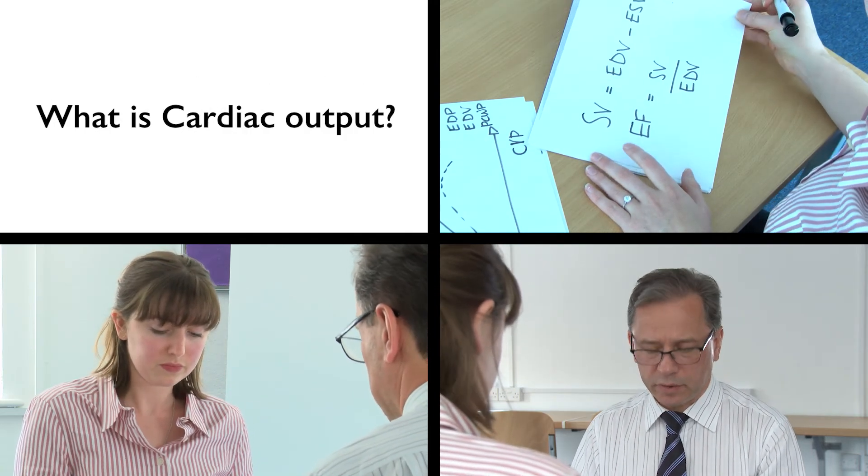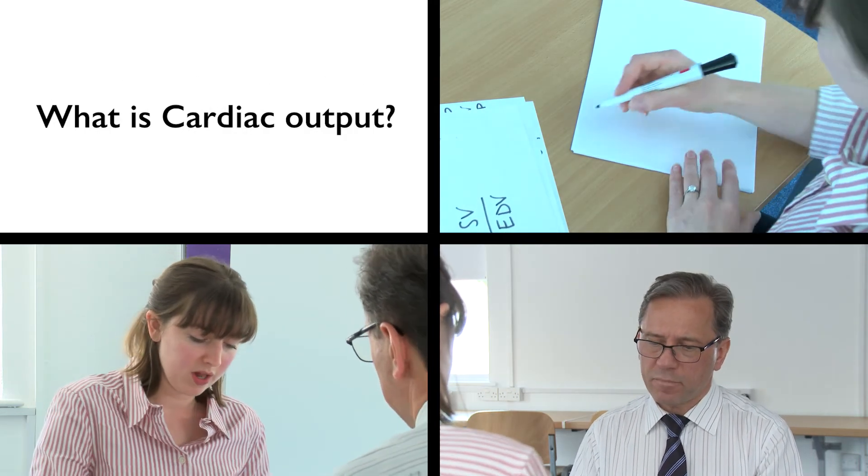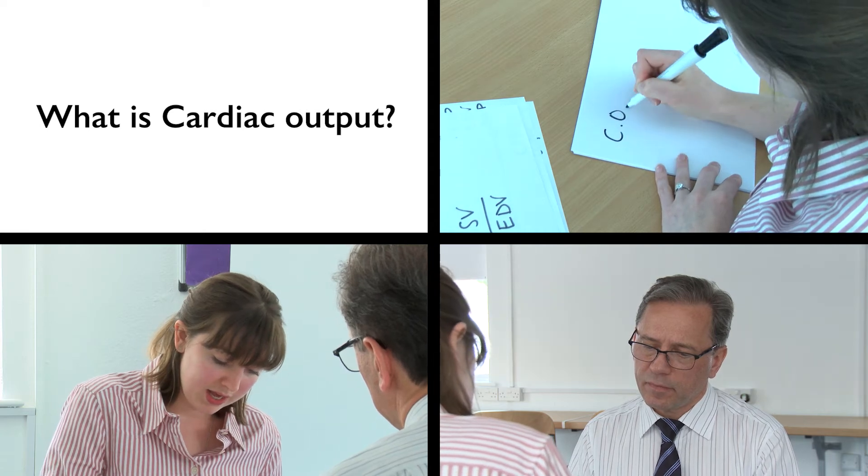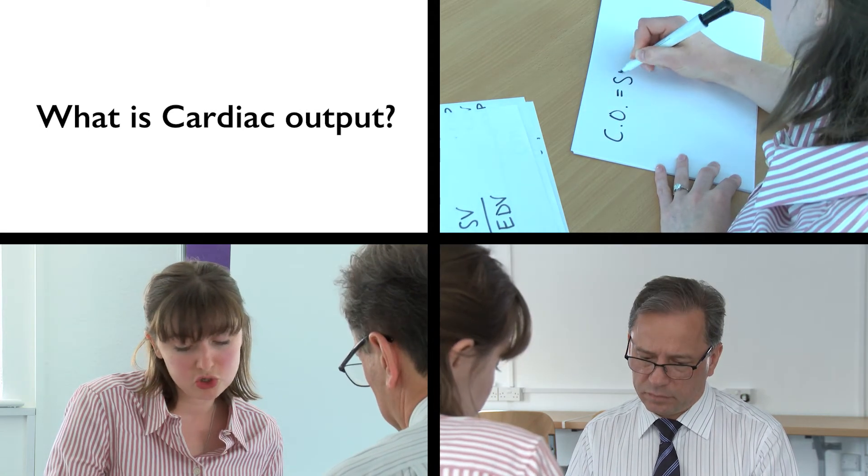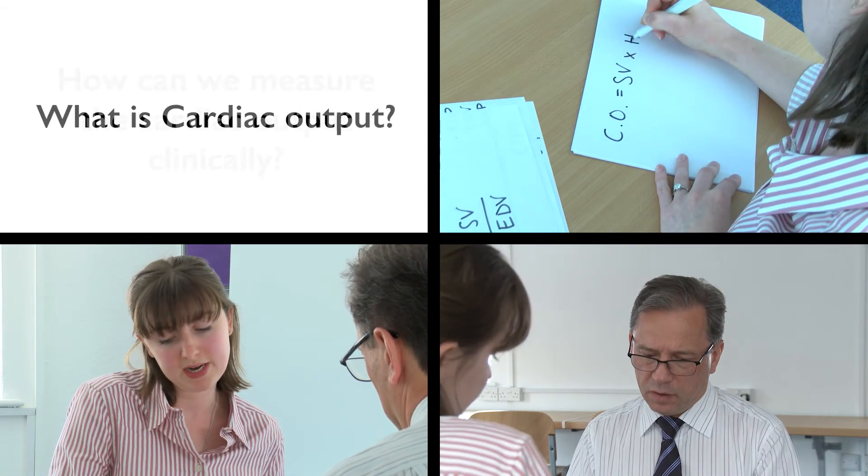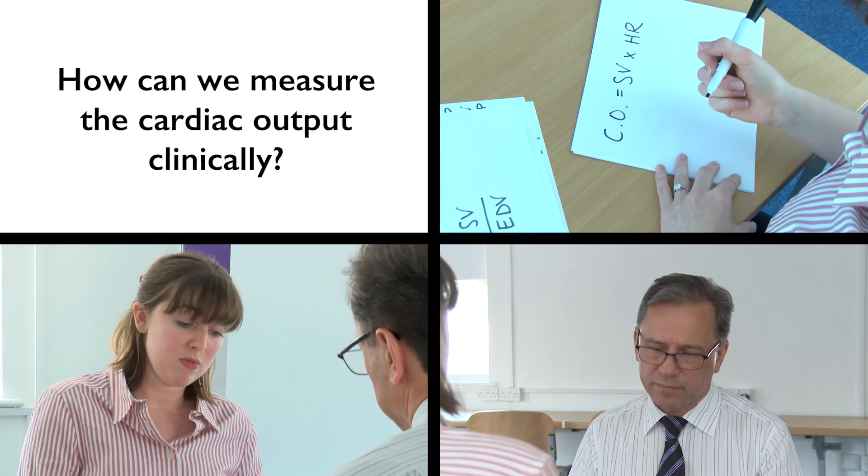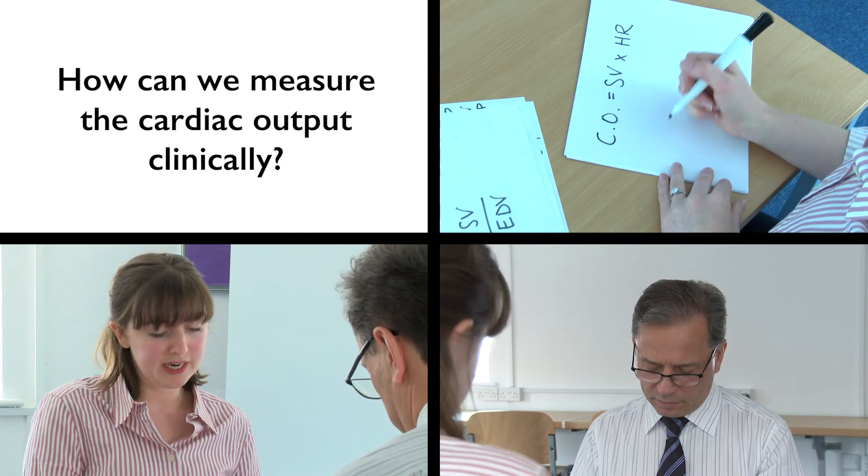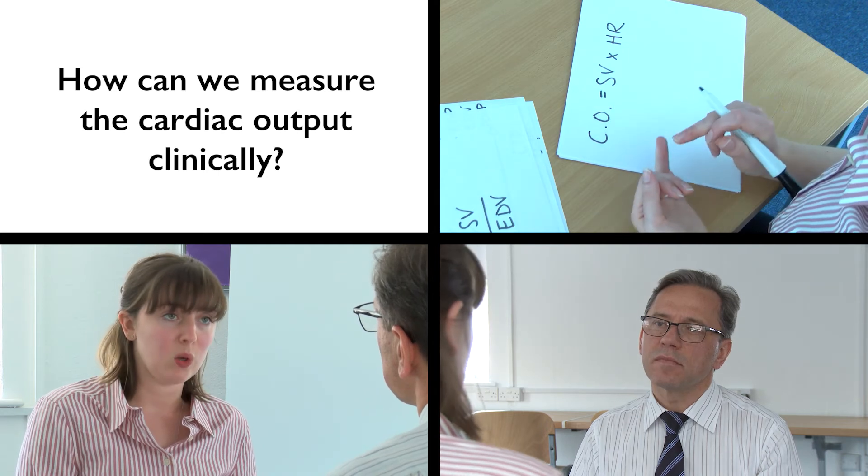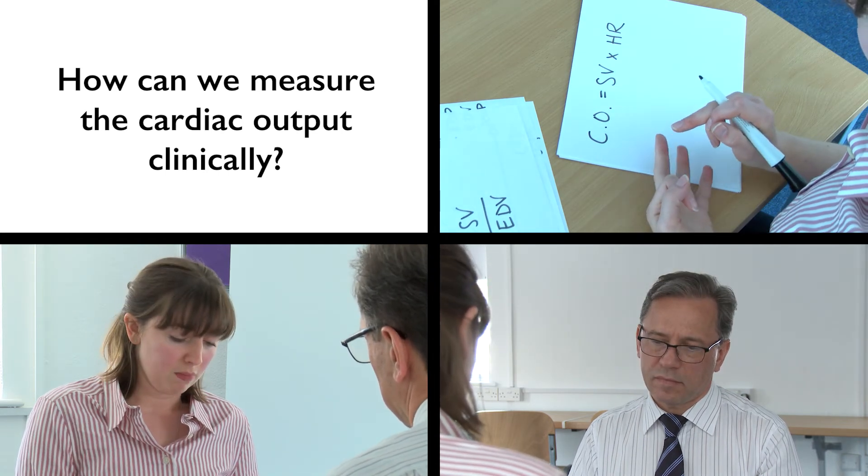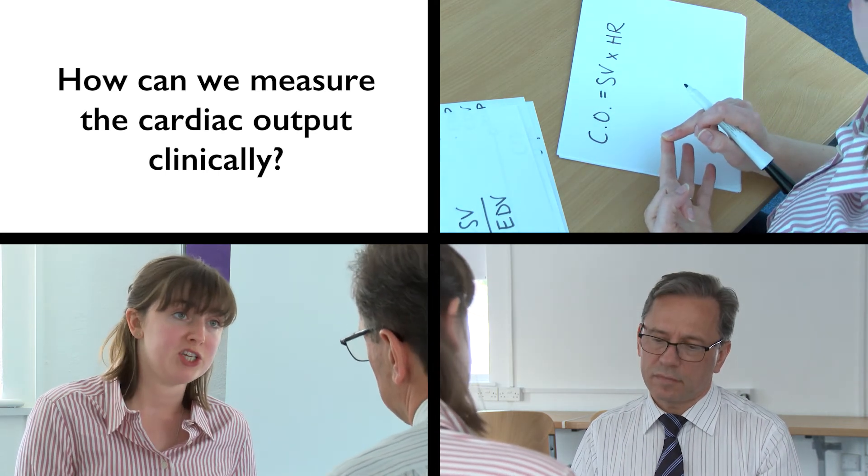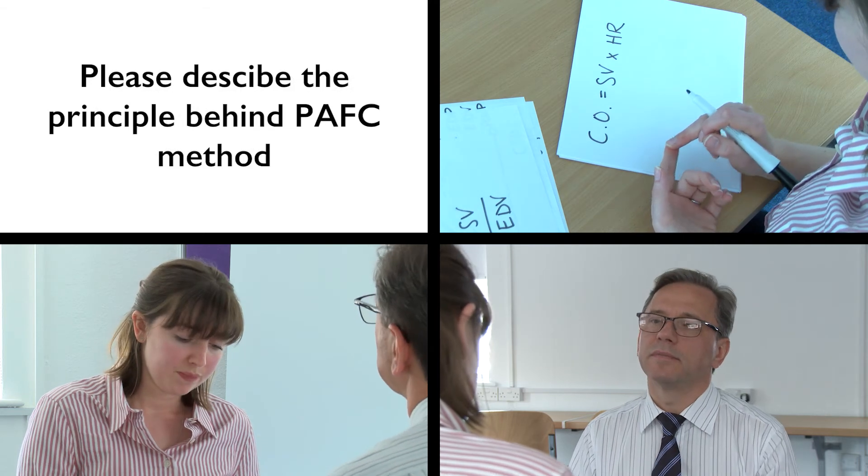What do you understand by cardiac output? Cardiac output can be described by the equation stroke volume times heart rate. And how can we measure clinically the cardiac output? What are the methods? There are multiple ways of measuring cardiac output. You can use PICO, LIDCO, pulmonary artery flotation catheter.